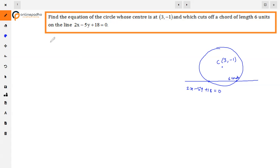For any circle equation, there are two things that need to be used. One is the center and the other is the radius. The center is given, so we find the radius.